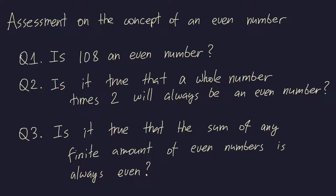Of course, the assessment might not have that exact question. There might be a slightly different question where the number is changed. In that case, the student might still, through internet resources or friends, prepare for this question without really understanding what an even number is. An even number is a number that's divisible by 2. One possible algorithm for answering this question correctly without knowing what an even number is, is to know that when a number ends with the last digit being either 0, 2, 4, 6, or 8, then the number is an even number.